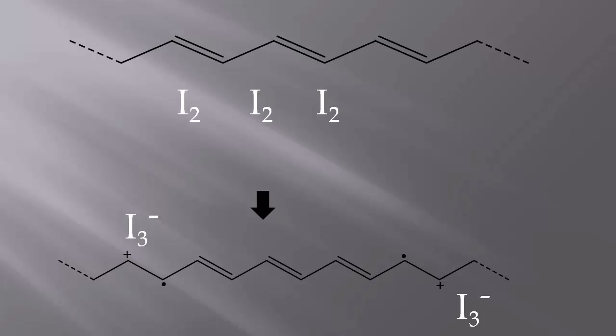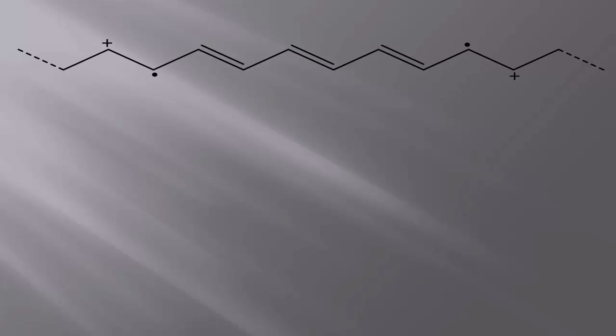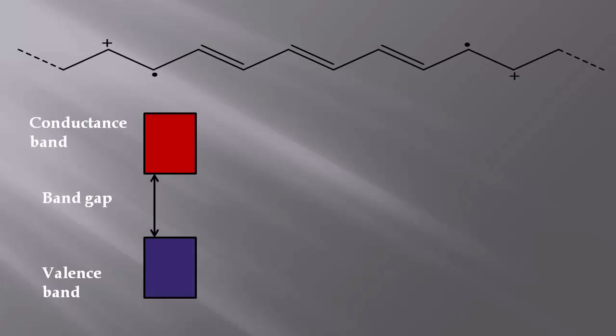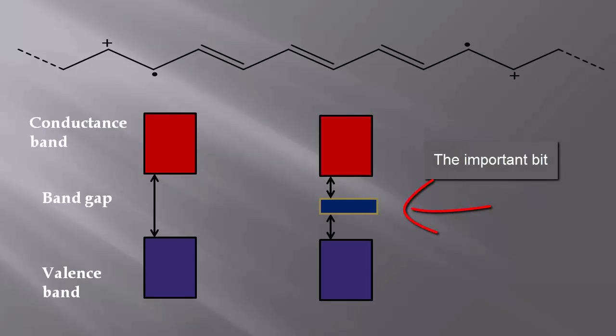The product is a polaron, a partially delocalized cation radical. Because of doping, the band gap is lowered as it creates a new band, making electron promotion easier.